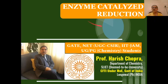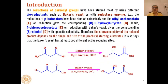Dear students, continuing with our lecture series on reduction reactions, in this lecture we will discuss what are enzyme-catalyzed reduction reactions in organic chemistry. As you have seen in cases of different types of metal hydride reduction and dissolving metal reduction, different types of functional groups can be converted into products by addition of hydrogen to the substrates, which is called a reduction reaction.